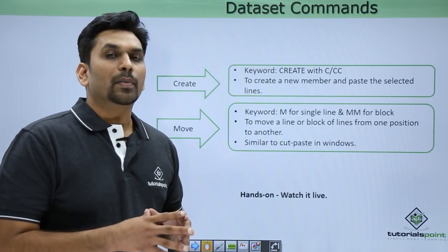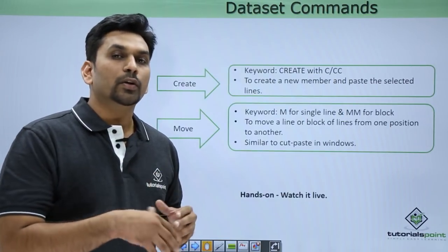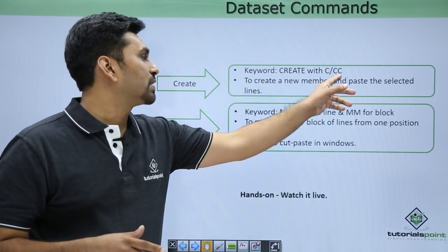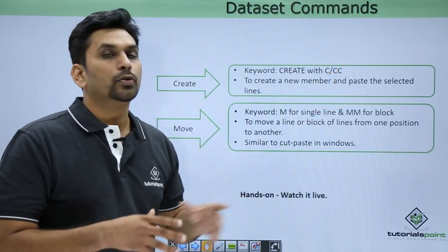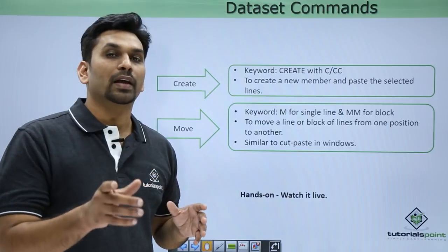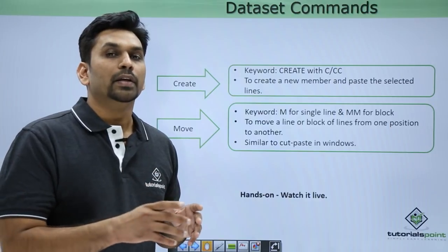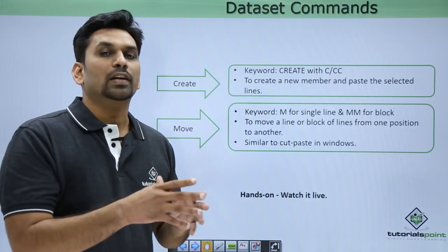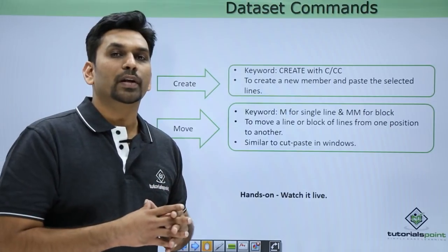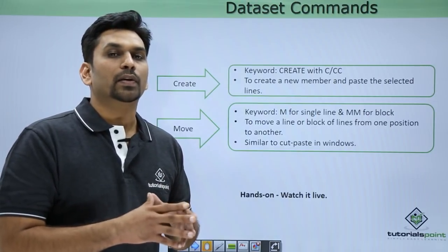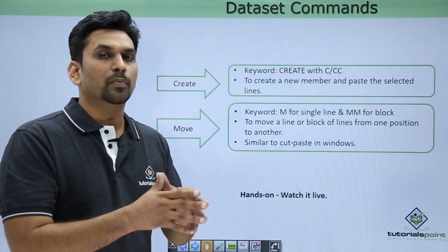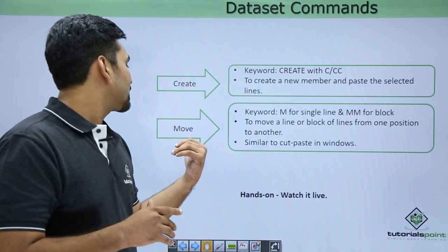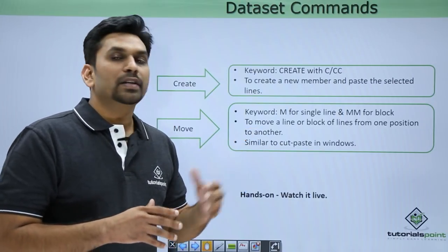The create command is used to create a new member. Select a block of lines using C or CC, write 'create' in the command line, and hit enter. That block of lines will be copied to a new member. It will ask for a new member name — enter it and hit enter, and all selected lines will be copied to the new member.